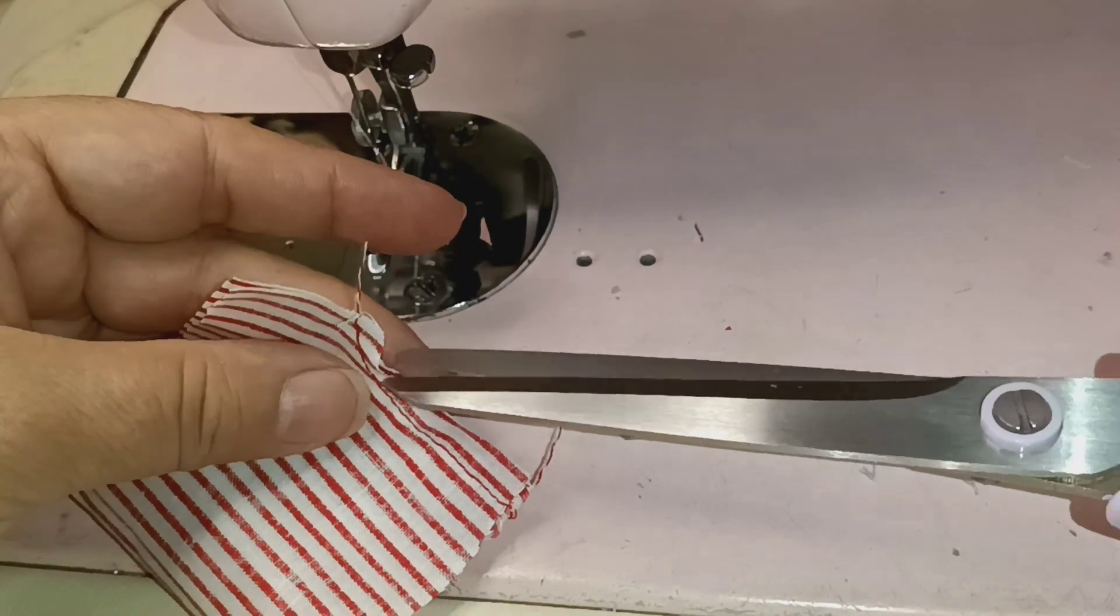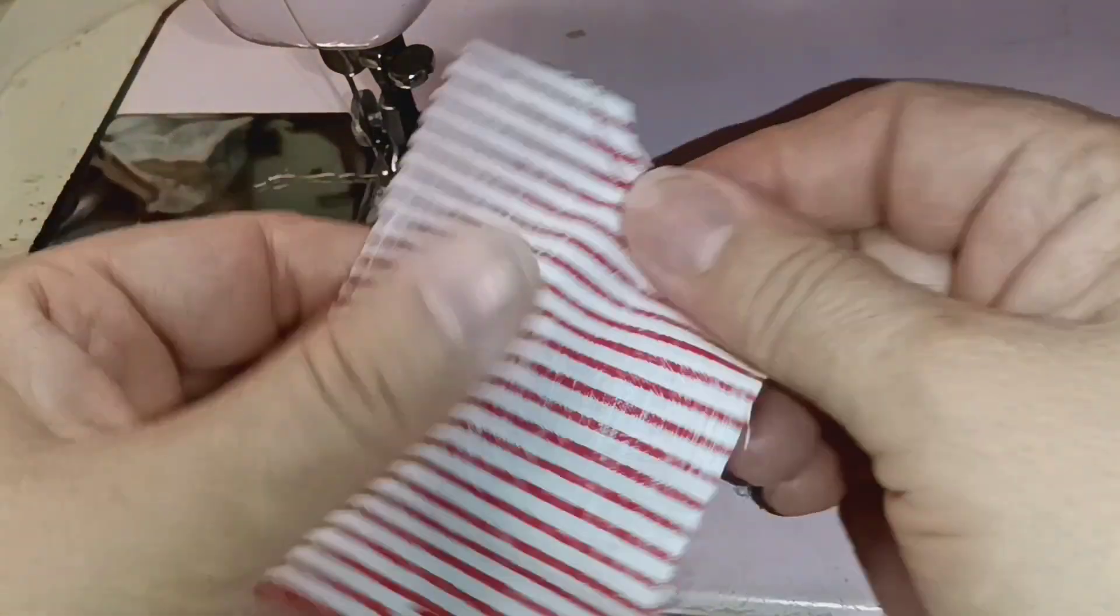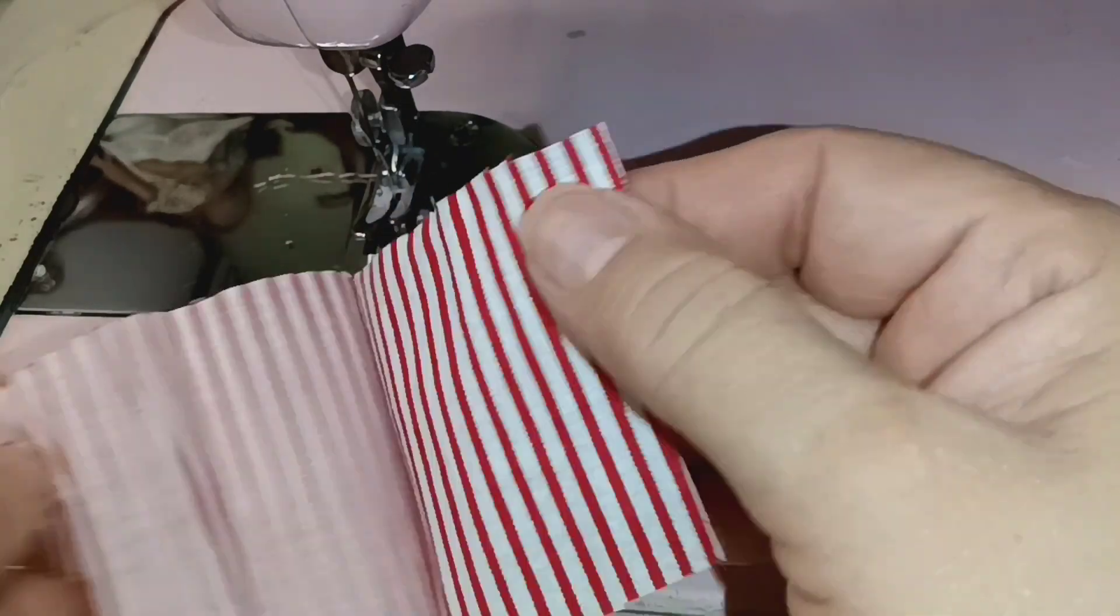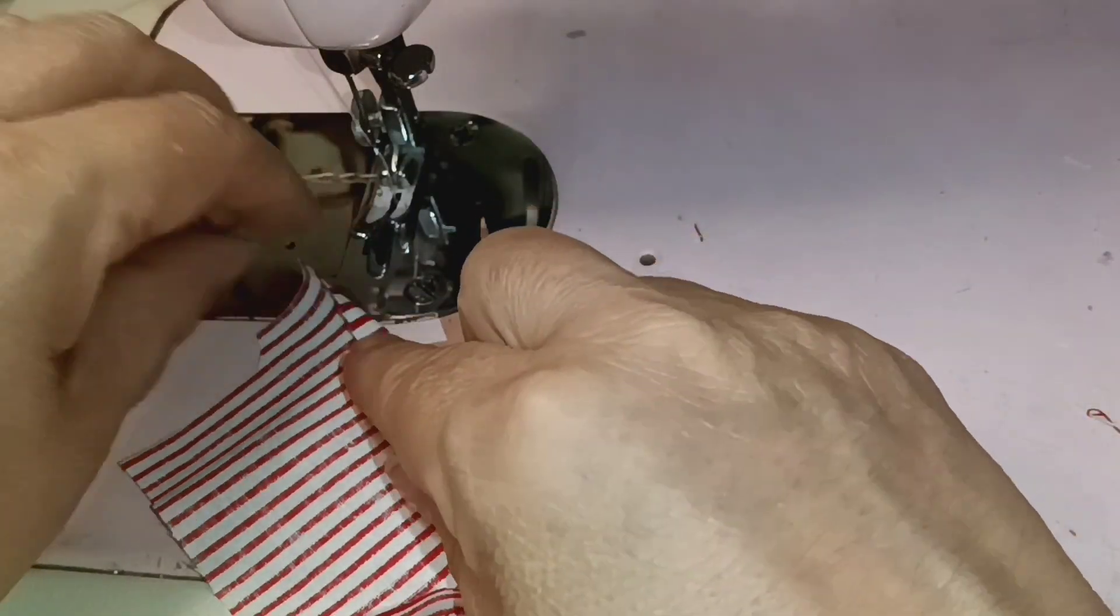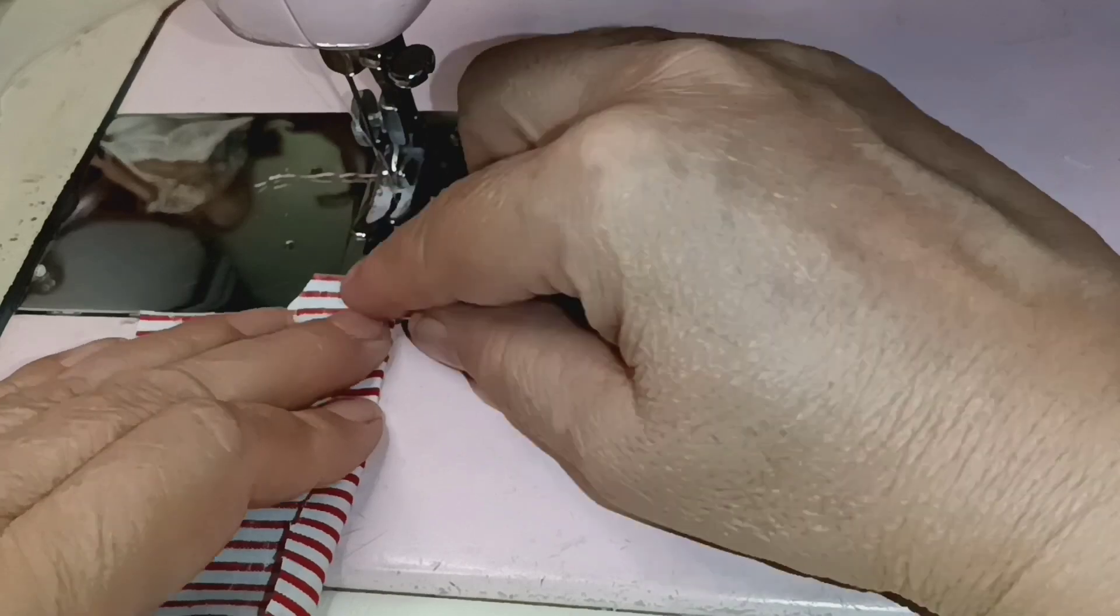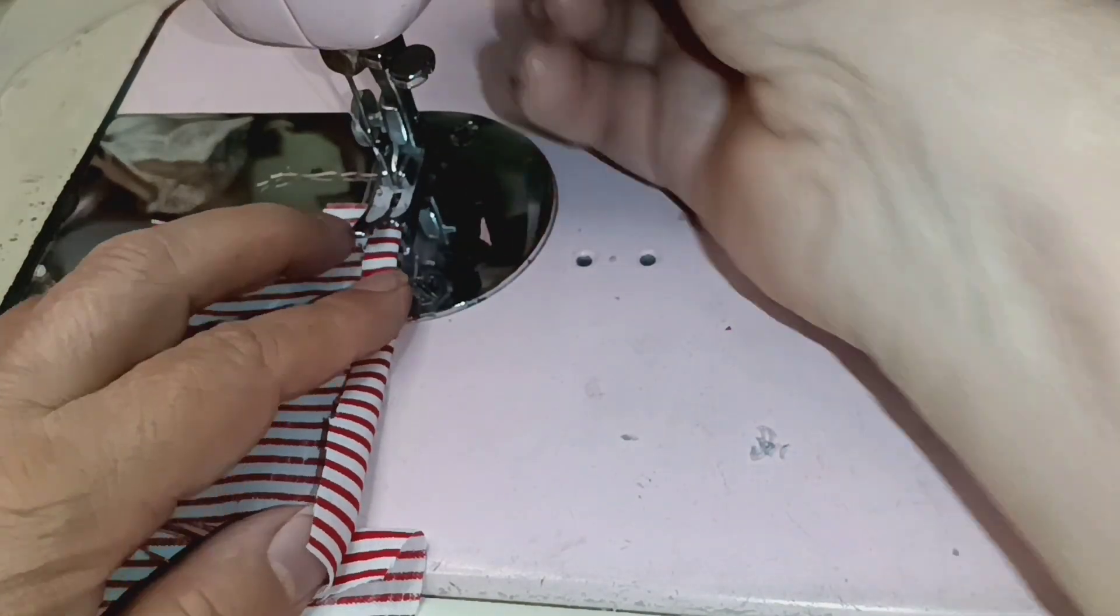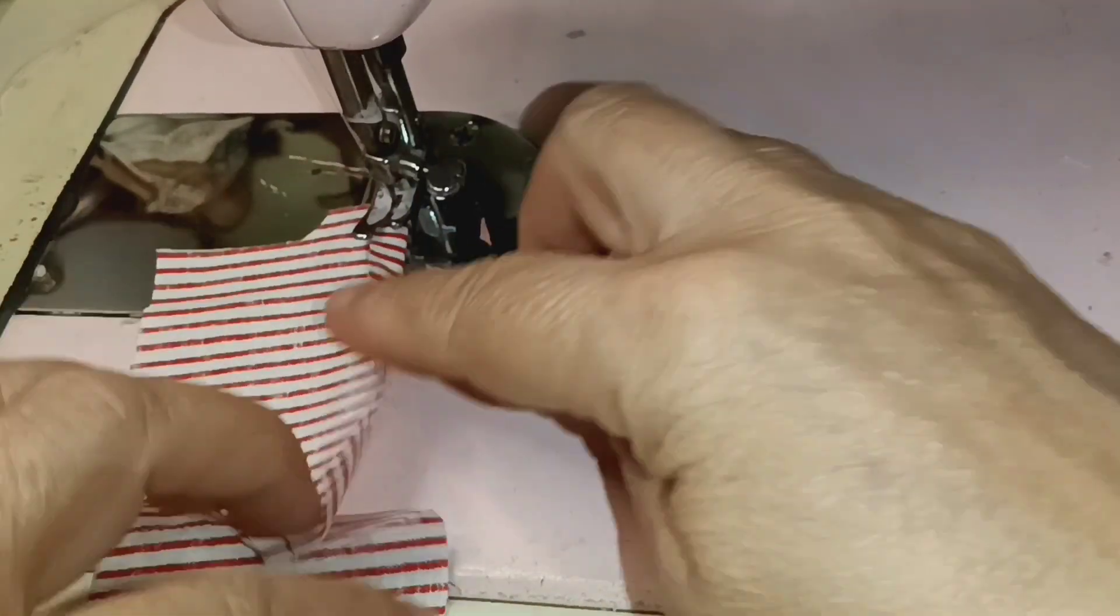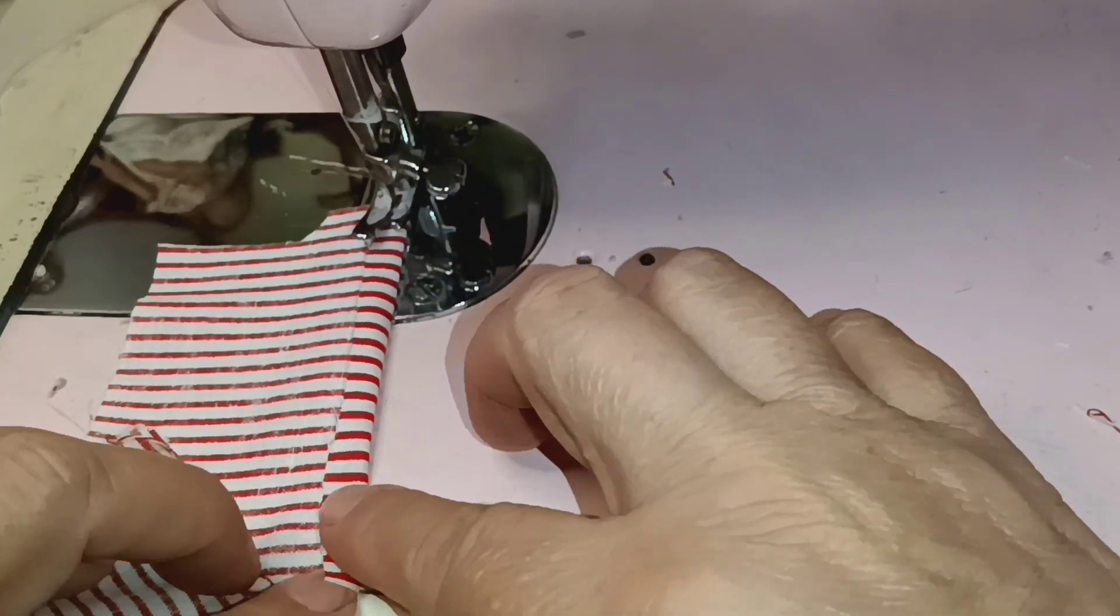Next thing is that we are going to do the hem. I'm going to do one first and then I'm going to do the other one and match it so that we have matching hem on both sides of these shorts.